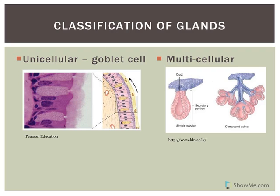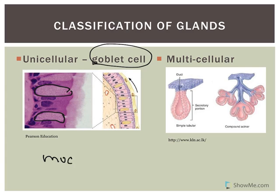Exocrine glands can be classified by structure. The only unicellular gland we have is the goblet cell. You'll see goblet cells in lab — they secrete mucus.